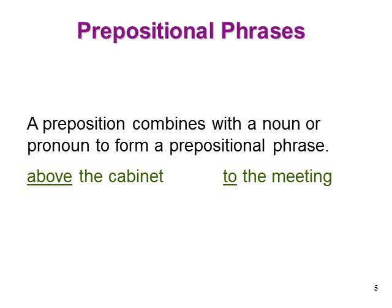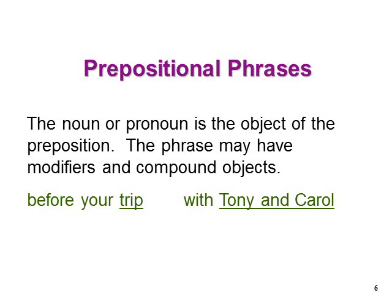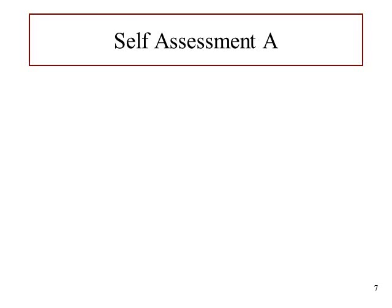When we talk about prepositional phrases, it's important to note that prepositions are usually found in a phrase, and the noun or pronoun in that prepositional phrase is referred to as the object of the preposition. In the phrase above the cabinet, cabinet is the object of the preposition. In to the meeting, meeting is the object. For before your trip with Tony and Carol, trip, Tony, and Carol are the objects of the preposition. They are never the subject of the sentence — they are part of the prepositional phrase. Why don't you take a look at self-assessment A and see if you feel comfortable identifying prepositions and their objects.